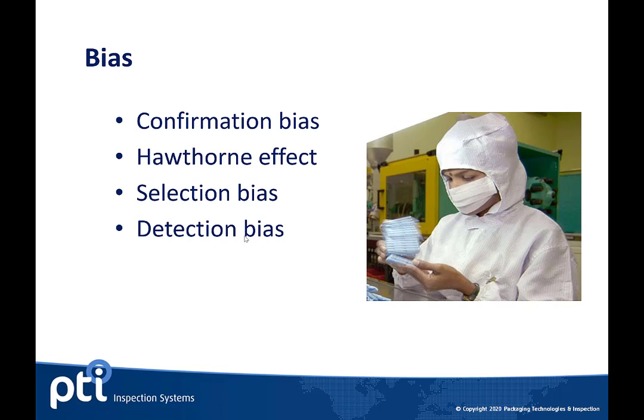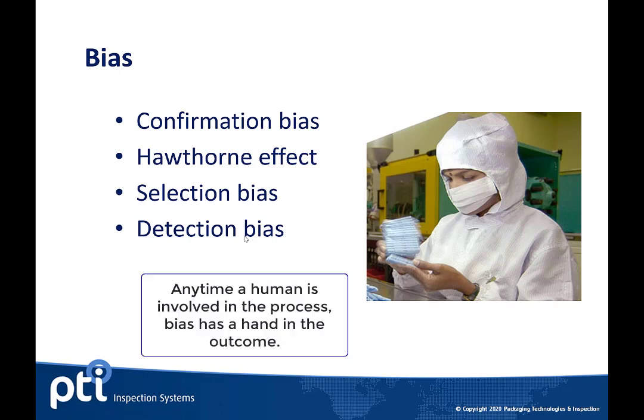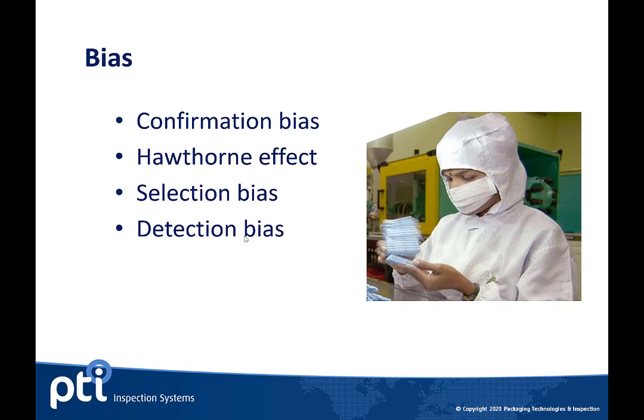Selection bias and detection bias are biases where an operator might say, 'I know defects always happen at the beginning of the shift,' so that's when they look for them and not elsewhere. Or if they typically see defects in a certain area of the package, they will not look at the other side of the package for additional defects. Bias can really drive the way a manual visual inspector performs their task.